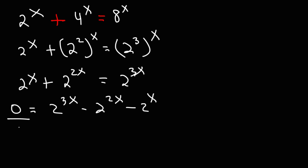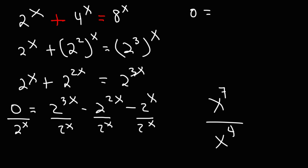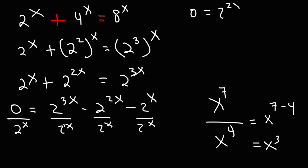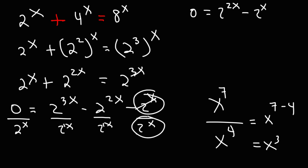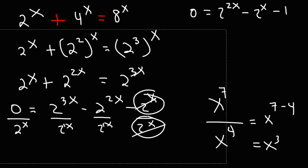What we're going to do next is divide every term by 2 to the x. So 0 divided by 2 to the x remains 0. For 2 to the 3x divided by 2 to the x — when you divide, you subtract the exponents. For example, x to the 7 divided by x to the 4 is x to the 7 minus 4, which is x cubed. So 2 raised to the 3x divided by 2 to the x gives us 2x. Here we subtract 2x by 1x, which gives us 1x — written simply as x. And 2 to the x divided by itself cancels, giving us 1.